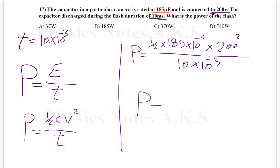The power is 370. The unit is watt, the unit of power is watt. Which option is that? It is C. I hope it's clear. If you have any question, please leave it under the video. See you.